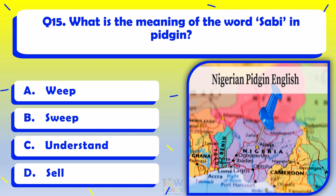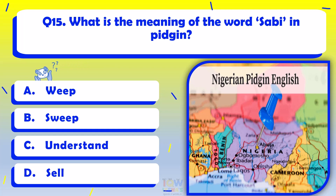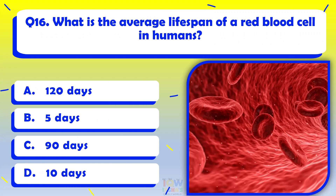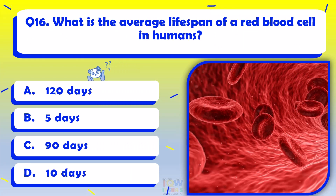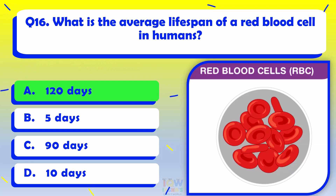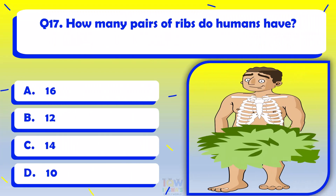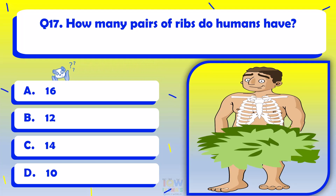What is the meaning of the word Sabian pigeon? Understand. How many pairs of ribs do humans have? 12.